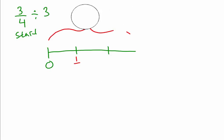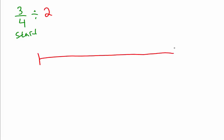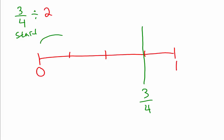That was the easiest one, so let's expand on this idea. I'm only going to change the divisor — instead of divided by three, I'll make it divided by two. Make sure you're writing this down and making these number lines in your books. Put a zero and a one. We have to make three-fourths again, so chop it in half, chop each half in half, find three-fourths, and locate it.